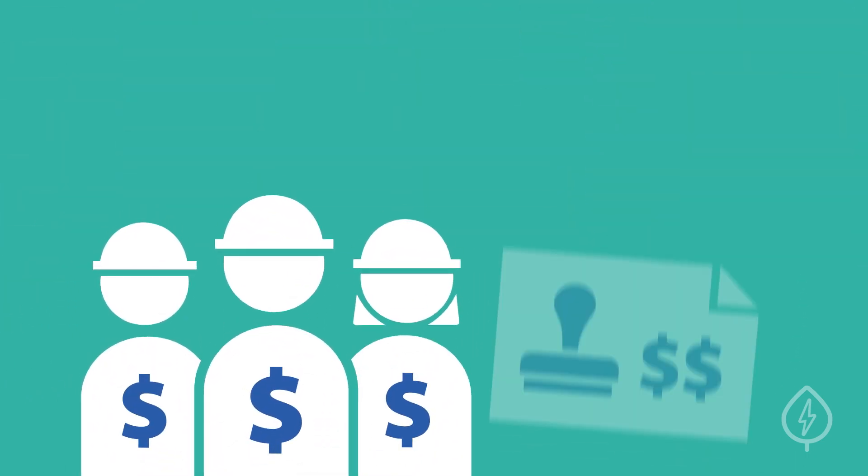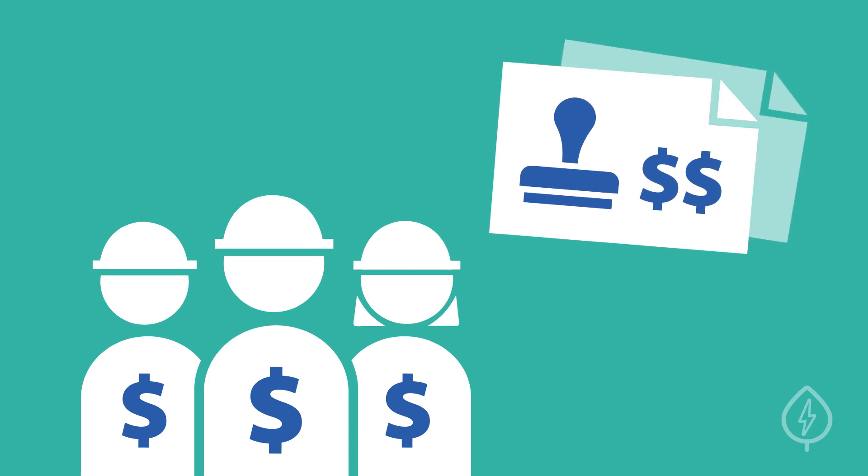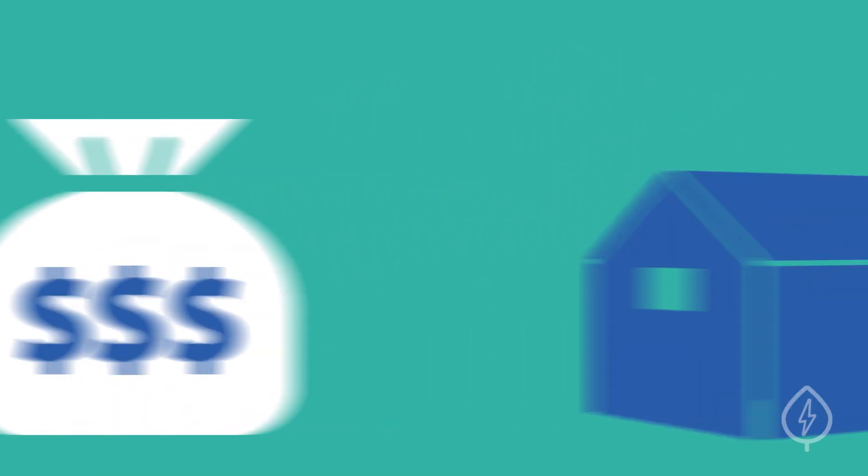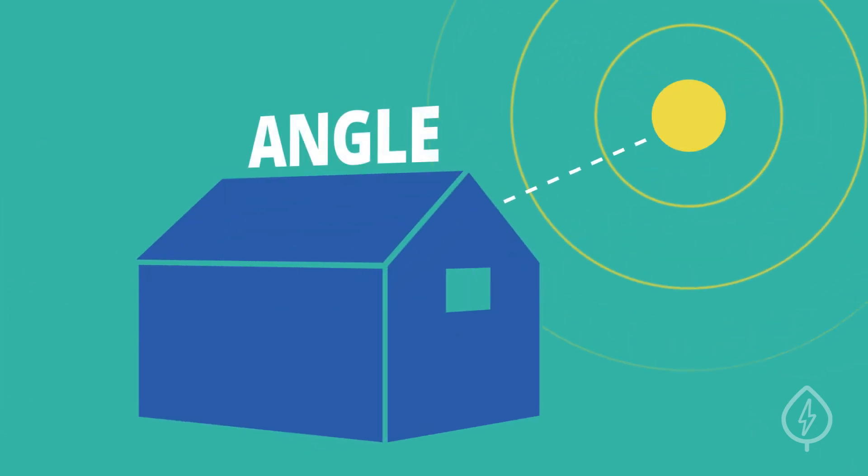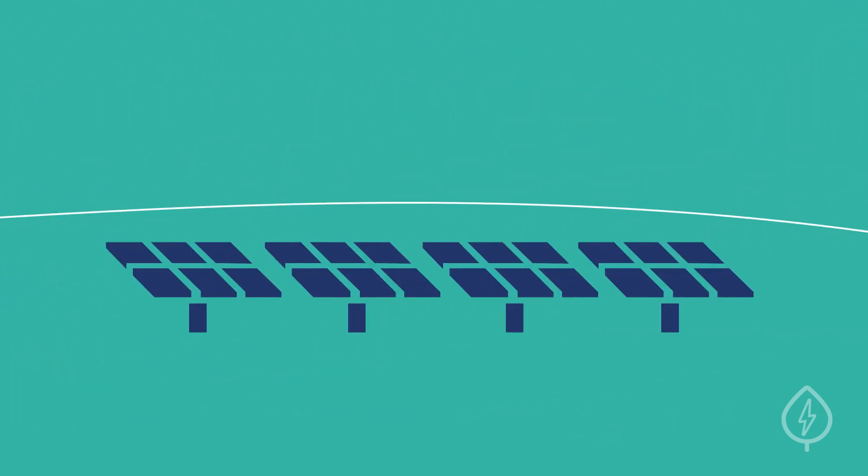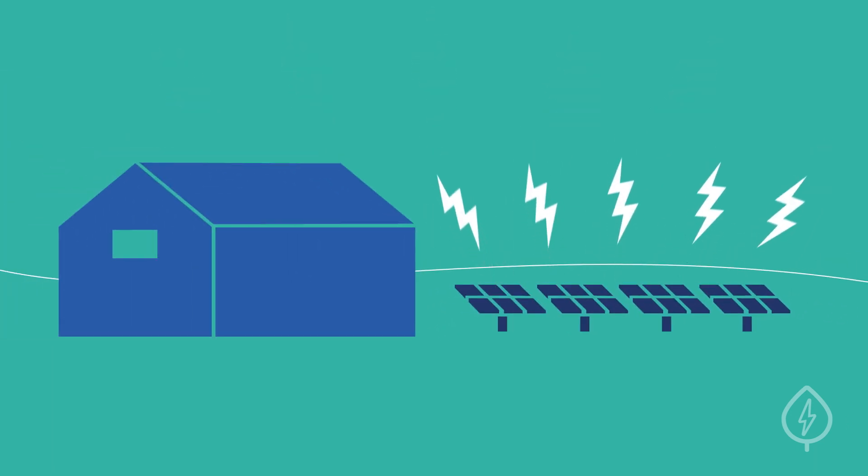Additional labor costs or permitting fees beyond what's needed for rooftop solar can also add to your upfront price. Fortunately, because you aren't restricted by the size, tilt, or angle of your roof, ground-mounted solar panel systems can be built to maximize electricity production, thus producing more solar electricity than a similarly-sized rooftop system.